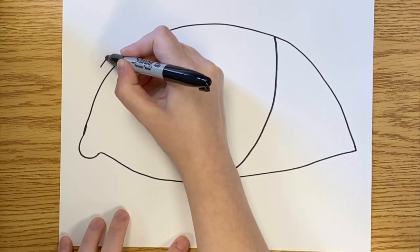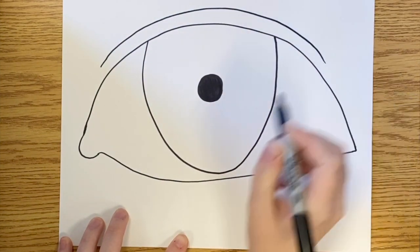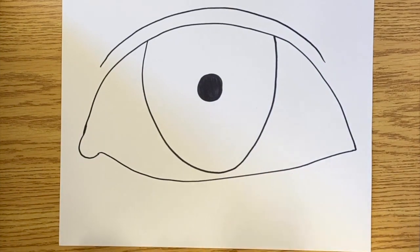Once I have my pupil all colored in, I'm going to draw another curved line right on top of our first curved line, and that's going to be our eyelid.